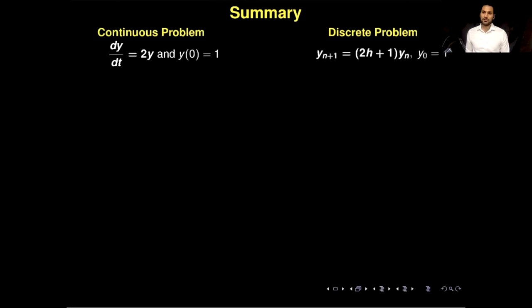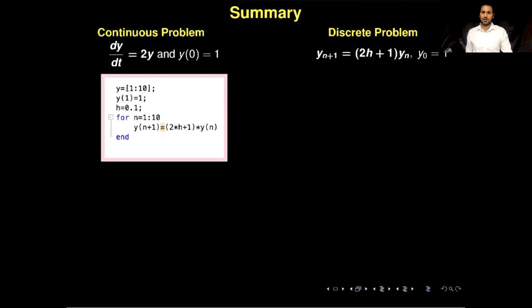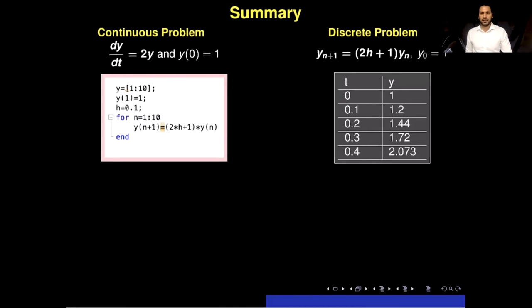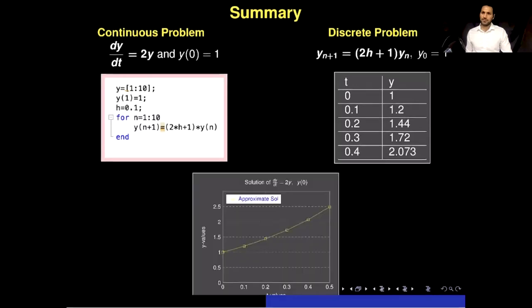To summarize: we had the continuous problem dy/dt = 2y with y(0) = 1, and by replacing the continuous term dy/dt with its approximate value we discretized the problem. The discrete version is y(n+1) = (2h+1)y(n), and we can use a computer language to solve it. Here is some simple MATLAB code for the solution. Running this code gives the y values of the solution, and plotting them produces the graph of the approximate solution of our exponential growth model.